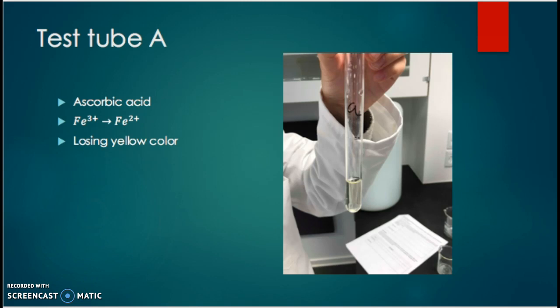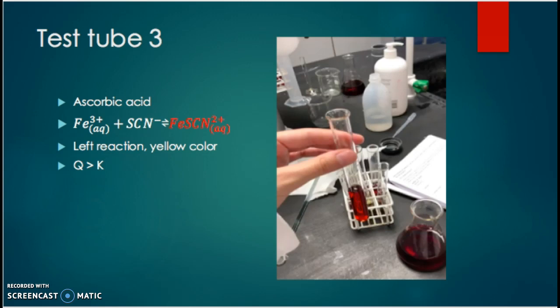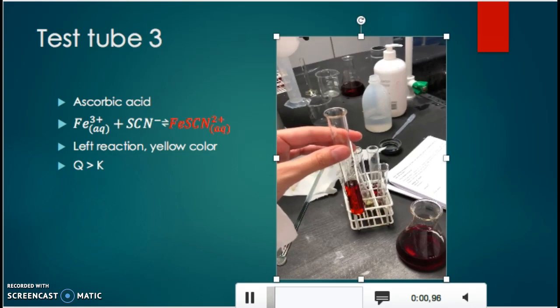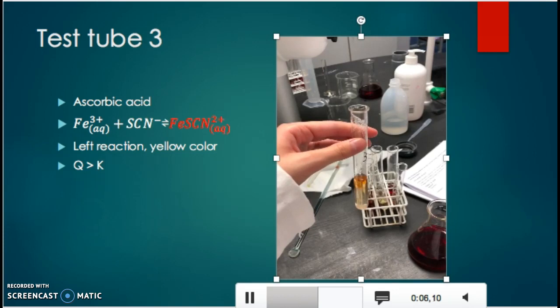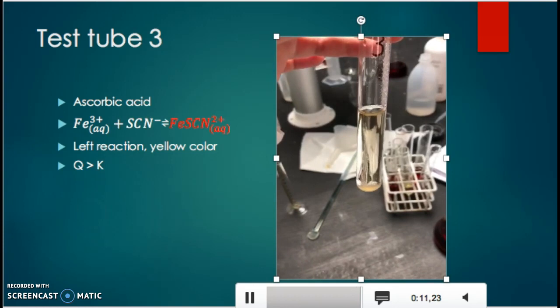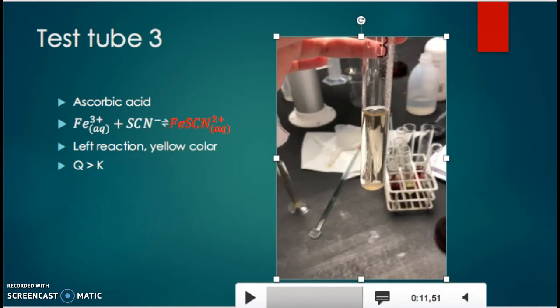In test tube three, we added ascorbic acid to our equilibrium solution. We could see the solution losing its color, turning yellow, as we are converting the Fe³⁺ ions to Fe²⁺ ions. So the system is forming more reactants. This can also be explained using Le Chatelier's principle — the system will work to the left as it wants to create more ions to be at equilibrium again.